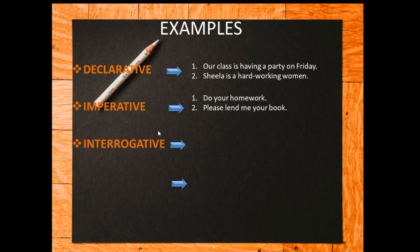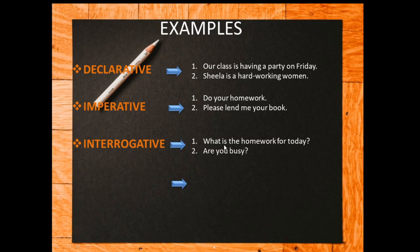Next, interrogative sentence. Interrogative sentences use WH questions or verbal questions. An example of a WH question: 'What is the homework for today?' — a question is asked using 'what', with a question mark at the end. So this comes under interrogative sentence. Second example: 'Are you busy?' — 'are' is the helping verb used at the start. This is a verbal question which starts with a helping verb and ends with a question mark, having subject and verb combination as 'you' and 'are'.